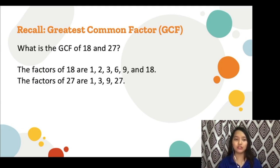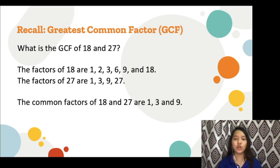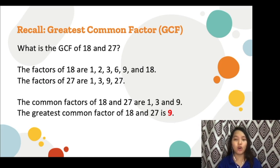The factors of 18 are 1, 2, 3, 6, 9, and 18, while the factors of 27 are 1, 3, 9, and 27. Their common factors are 1, 3, and 9. But our goal is to find the greatest. So the greatest among all the common factors is 9. The GCF of 18 and 27 is 9.